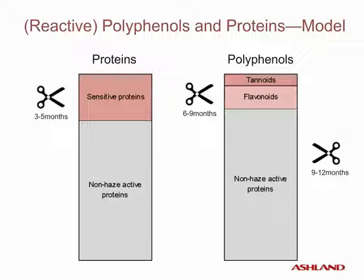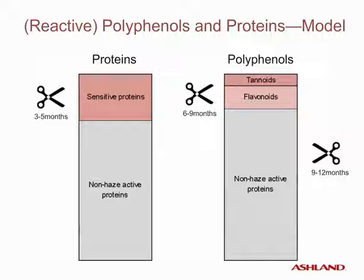This slide shows shelf-life implications as a result of the protein and polyphenol components. Only a fraction of the proteins in beer are haze-forming and should be removed; a shelf-life of about three to five months can be achieved by removing the sensitive protein fractions. The highly reactive tannoid fraction must be completely removed. Removal of tannoids, flavonoids, and sensitive protein can provide six to nine months of shelf-life. Additional shelf-life can be achieved by further removal of monomeric polyphenols like catechin, which in time will generate secondary tannoids. It is recommended to remove about 40% of the monomeric polyphenols to achieve up to 12 months of shelf-life.